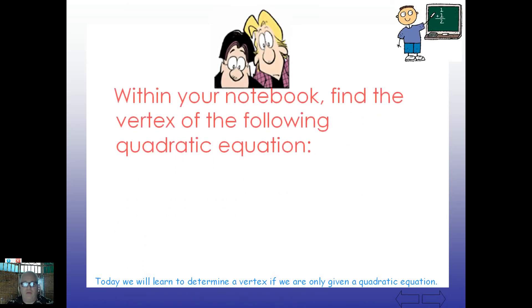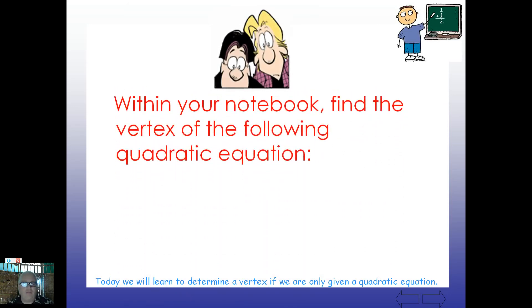All right then. Within your notebook, find the vertex of the following quadratic equation. So, on your own here, negative x squared plus 6x plus 1. Let's follow those steps that we did. And I'll kind of get you started in the right direction. Something I would encourage you to do consistently when you're given this is identify A, B, and C. So, A is negative 1, B is 6, and C is positive 1.